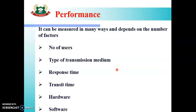Then, transit time — how much time is taken for transmission, that is, how much time it takes for data to reach from sender to receiver. Then, hardware — how much hardware is needed to set up our network and what is its cost, how many softwares are needed and what is their cost. These are all factors that affect our network performance.